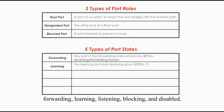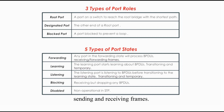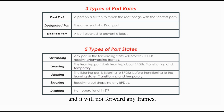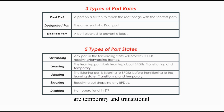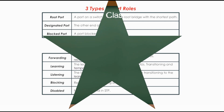The five port states are: forwarding, learning, listening, blocking, and disabled. Both root port and designated port are in the forwarding state, sending and receiving frames. A blocked port is in the blocking state and will not forward any frames. Ports in the listening and learning states are temporary and transitional between the blocking state and the forwarding state. Any port in the disabled state will not participate in STP.